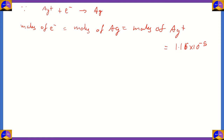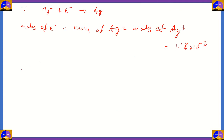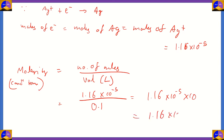Now we need to find the concentration of the initial silver ions. Concentration can be expressed as molarity: molarity equals number of moles of solute divided by volume of solution in liters. The number of moles is 1.16×10⁻⁵ divided by 0.1 liters. So we get 1.16×10⁻⁵ × 10 = 1.16×10⁻⁴ molar, which is the correct answer.